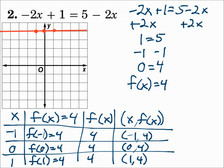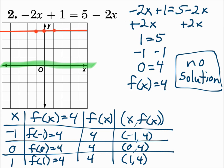The solution is the x-intercept, but the line never crosses the x-axis. So there is no x-intercept and there is no solution. If you remember, back when we had 1 equals 5, when the variables cancel out and you have a false statement, then there is no solution. It works just the same here on the graph.